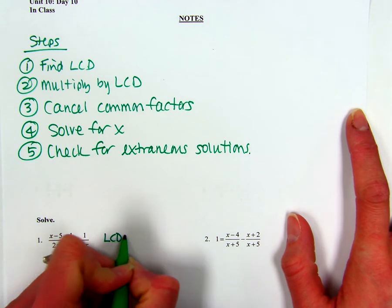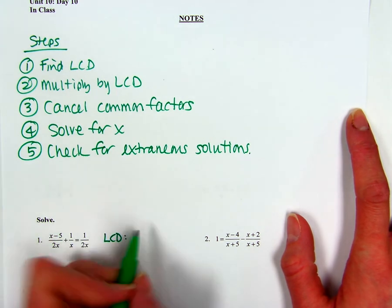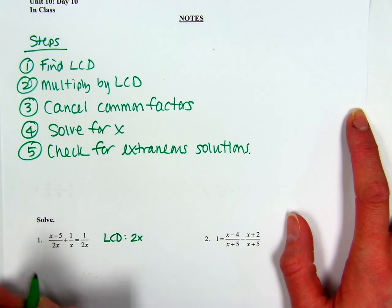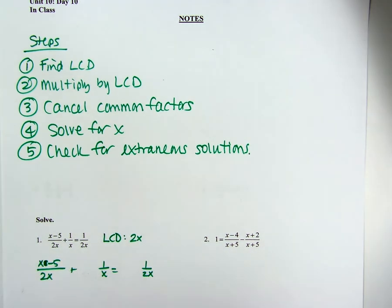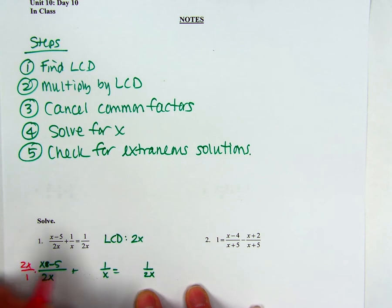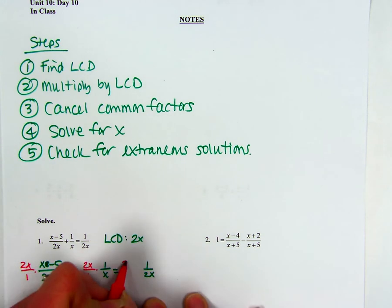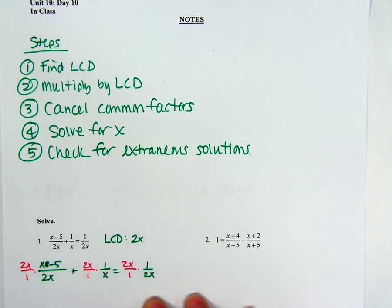So first thing is find your LCD. X and 2X both go into 2X, so there's my LCD. Remember, I'm writing down each fraction with a little bit of space in between so that I can put in my LCD. My LCD is 2X. And if you pick the right LCD, then you should have no more fractions after you cancel and multiply.